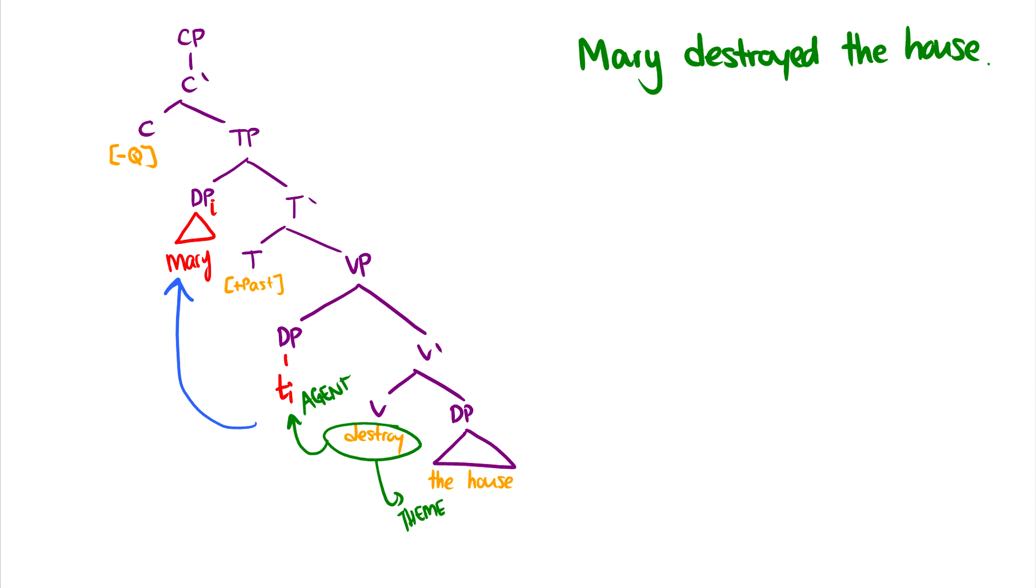And then in order to get word order, we have Mary moving up to spec TP where it was originally. So this is how we do a sentence like Mary destroyed the house. And don't worry, it is still okay for the tense on T to move down to the verb. The specifier VP does not block this. So a lot of arrows and the trees are gonna have a lot more arrows as we go on because there's actually quite a bit of movement that goes on in our trees.